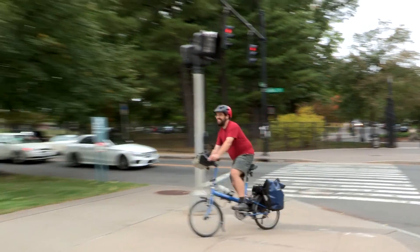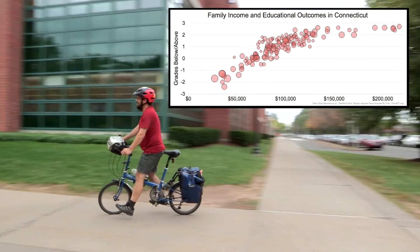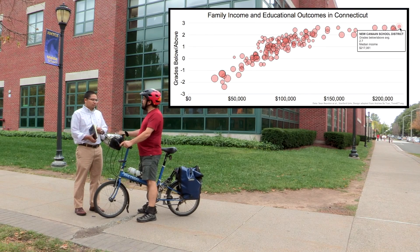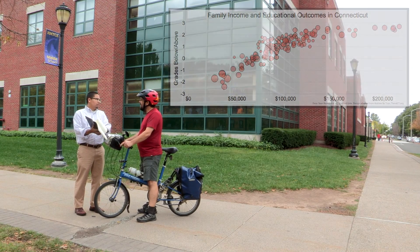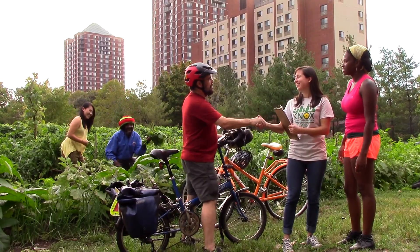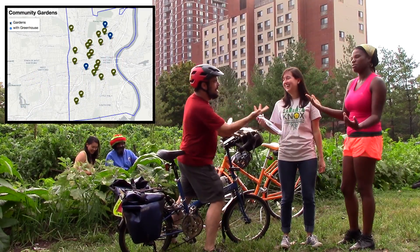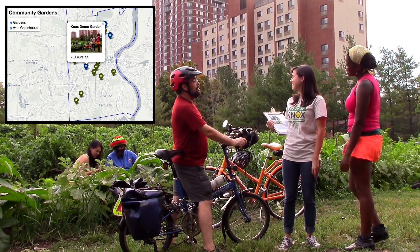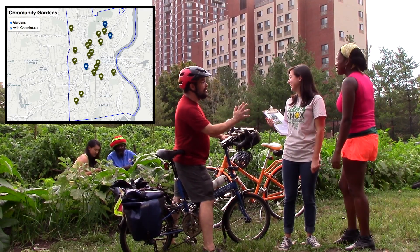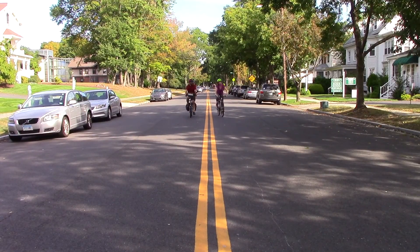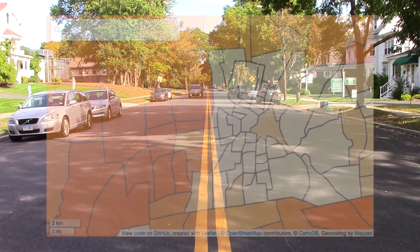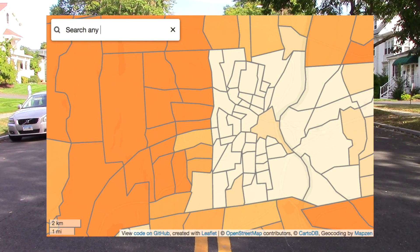We'll learn how to create an interactive scatter chart to illustrate the broad relationship between family income and student education outcomes, and show details for each point. We'll build an interactive point map of community gardens that displays locations by category with a click to reveal more text and images. Finally, we'll create a color-coded polygon map to compare census tracks between cities and suburbs, with a search button to help low-income families find housing in higher opportunity neighborhoods.